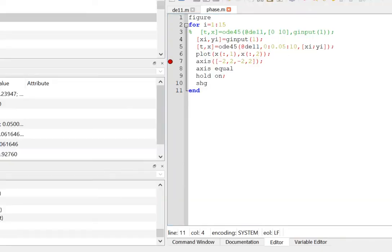Now there is another way to draw the phase portrait, which would be to do it numerically. I want to draw lots of solutions with different initial conditions, where the initial condition is taken from a mouse click. So here's a little m file. Figure just opens a new figure window. For i equals 1 to 15, that's just a little loop where I'll choose 15 different initial conditions.